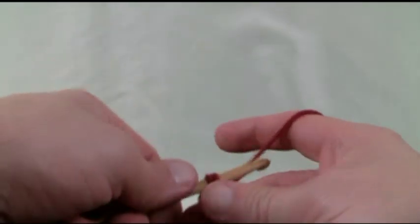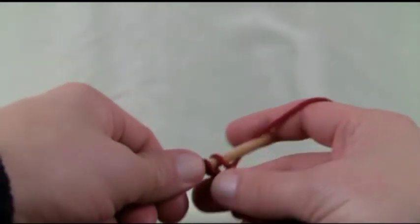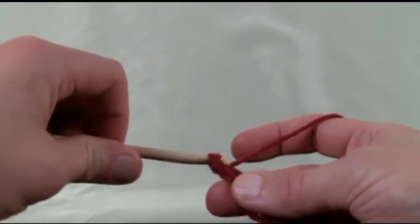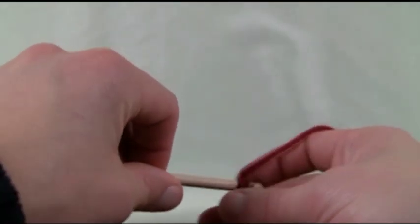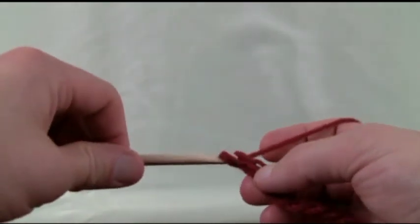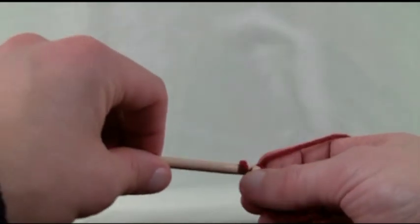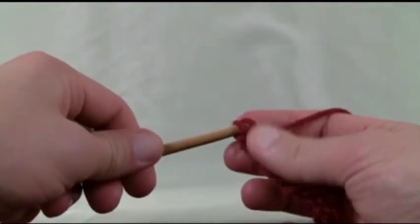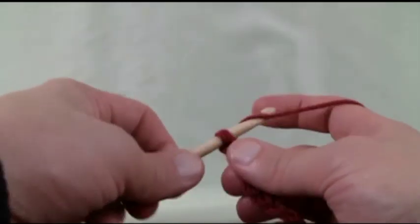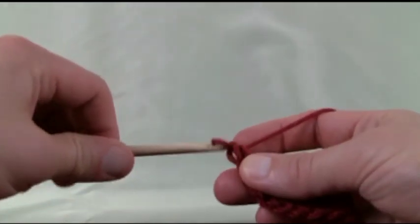I'd almost recommend that with every tutorial you probably do the foundation, especially if you're going to be doing border work. There's nothing worse when you come around to the bottom of where your project started and there's only one loop. Your border will not sit properly on the one loop. So this is a really good practice to get into.